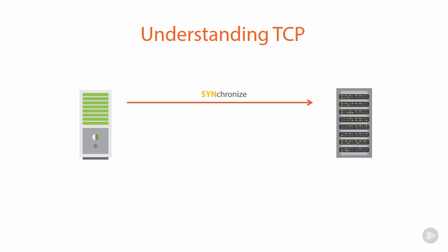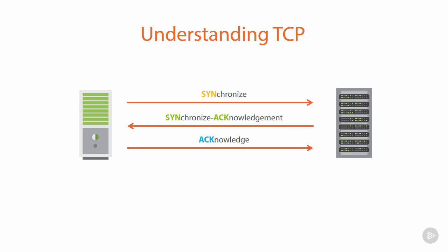The second machine then acknowledges that by sending a synchronized acknowledgement response, usually referred to as SYNACK. Now all going well, the first machine will then come back and send an acknowledgement — an ACK response. And this is the three-way handshake. They've now established a connection together. This is pretty much TCP 101 — the fundamentals of how the protocol works.